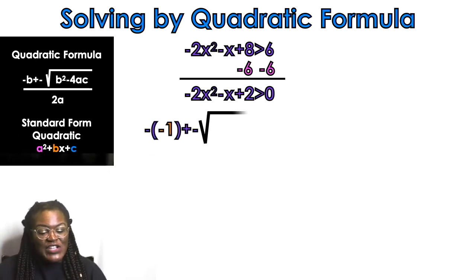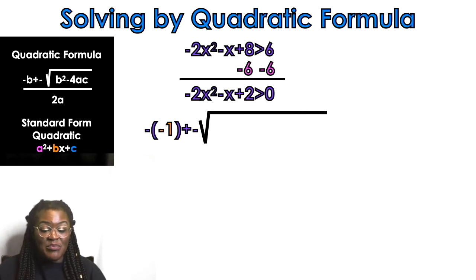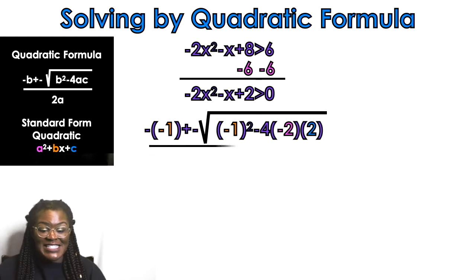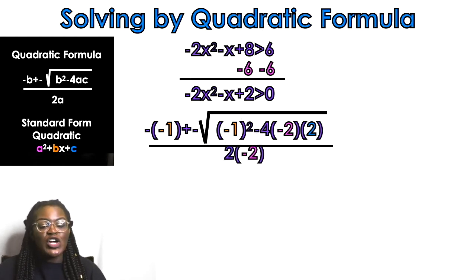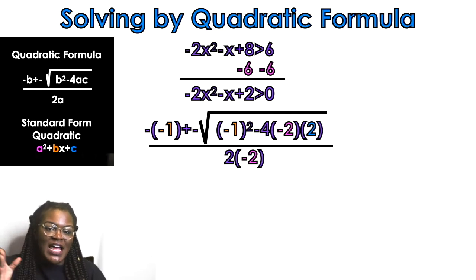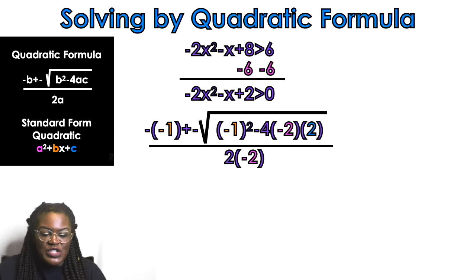So: negative negative 1, plus or minus the square root of negative 1 squared minus 4 times a (which is negative 2) times c (which is 2), all over 2a where a is negative 2. I color-coded it so there's no confusion.